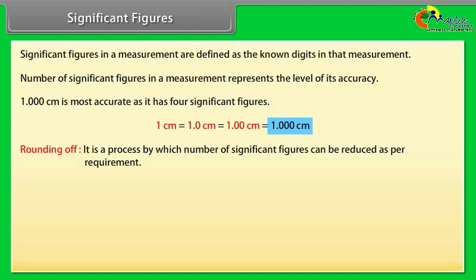Rounding off: it is a process by which number of significant figures can be reduced as per requirement. Let us take an example: L is equal to 2.6587 centimeters. On rounding off, L is equal to 2.659 centimeters.